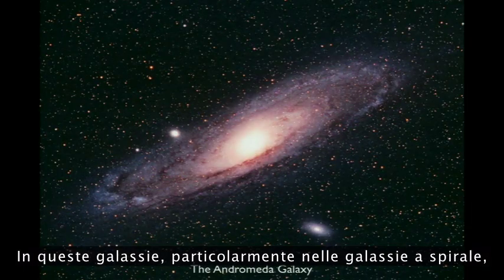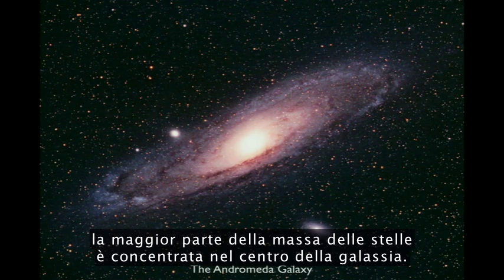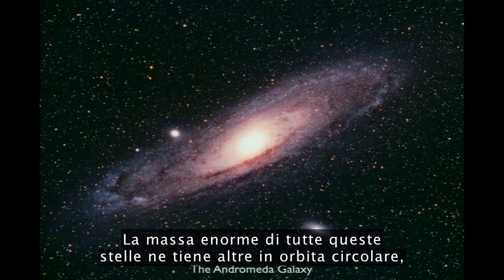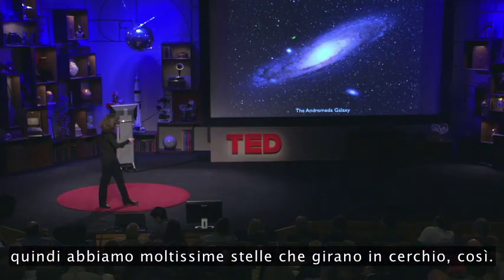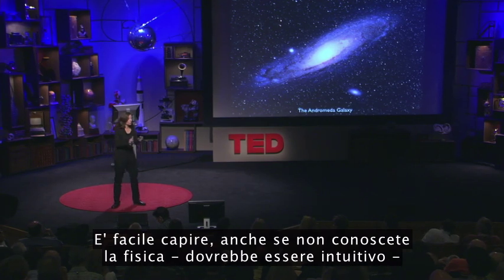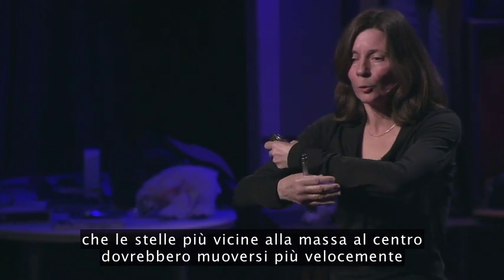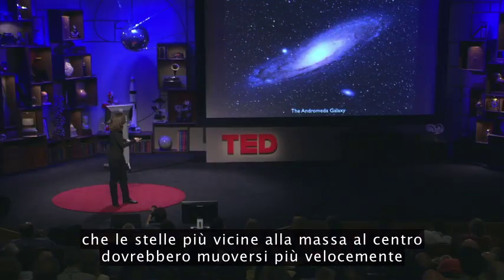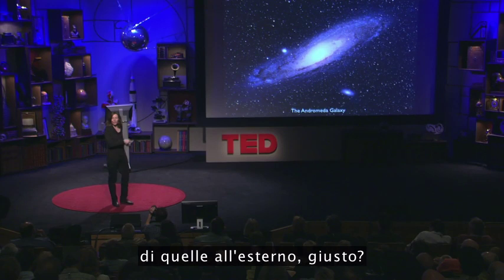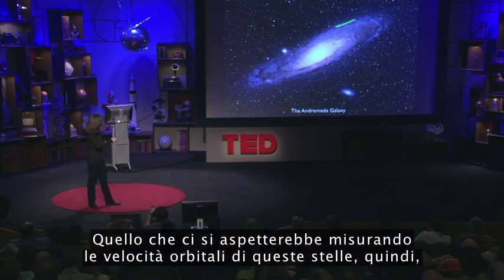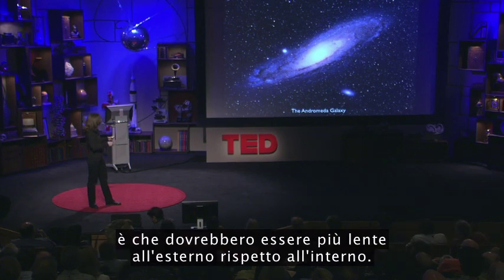In these galaxies, especially in a spiral galaxy like this, most of the mass of the stars is concentrated in the middle of the galaxy. This huge mass of all these stars keeps stars in circular orbits in the galaxy. Stars that are closer to the mass in the middle will be rotating at a higher speed than those that are further out. So what you would expect is that if you measured the orbital speed of the stars, they should be slower on the edges than on the inside.